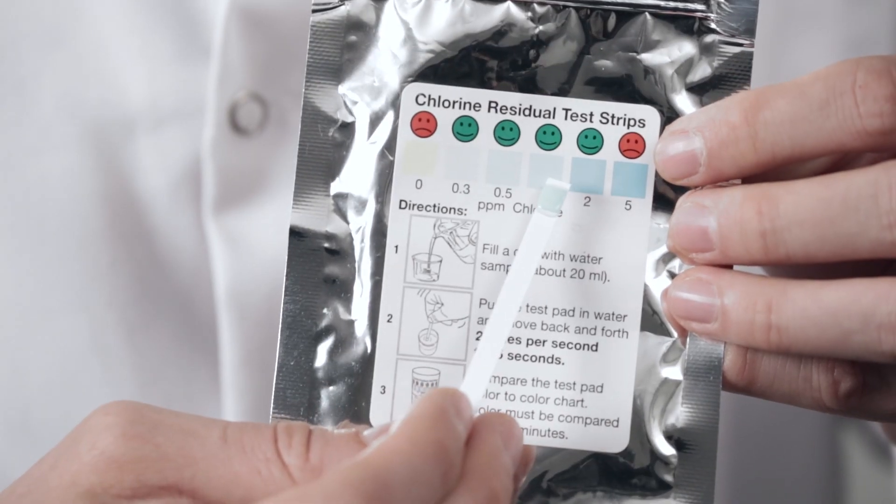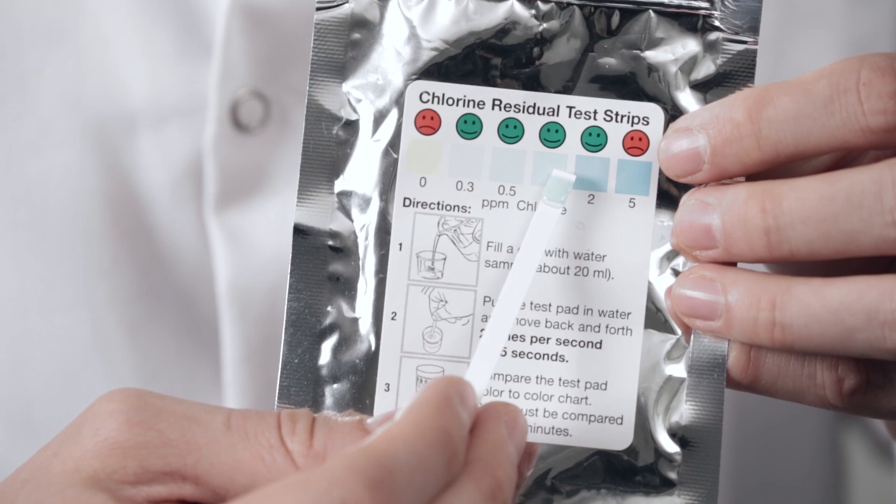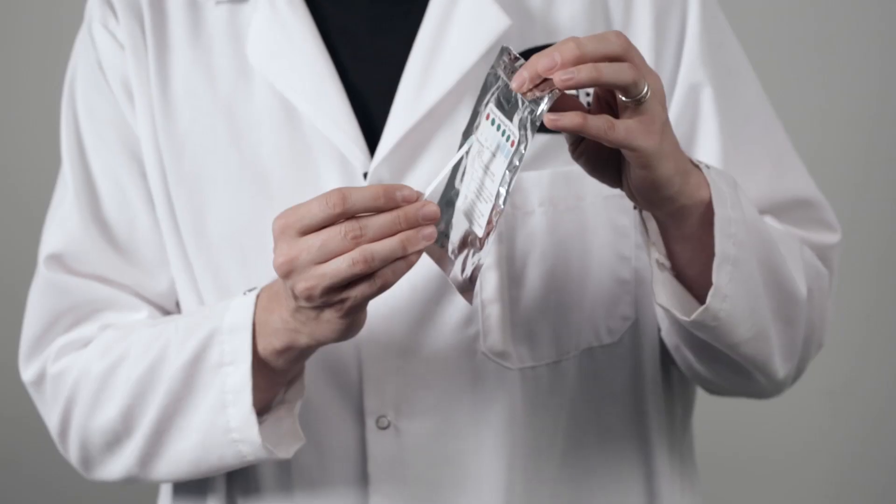As you can see, we're between one and two ppm of chlorine added, which is exactly where we want to be to make sure our water is safe.